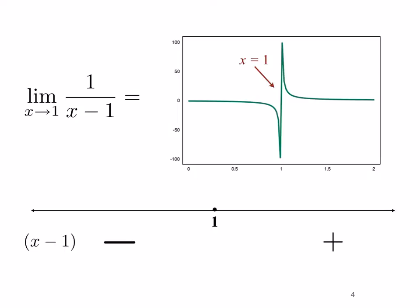From our sign line we have the factor x minus one to consider. Since one is positive, the sign of the entire limit is going to be determined by that factor. If we pick a value to the left of one, then x minus one is negative — for example, zero minus one is negative, so all values to the left of one are negative. As we approach one from the left, x minus one is getting closer to zero but always carries a little negative sign, so the function goes to minus infinity, as we can see from the graph.